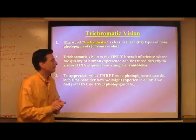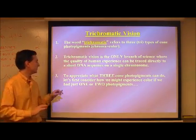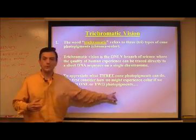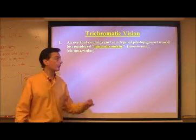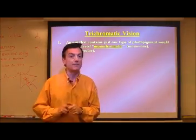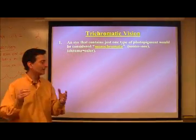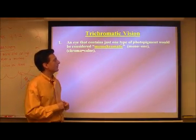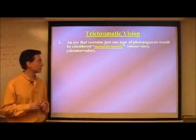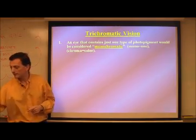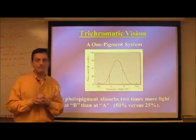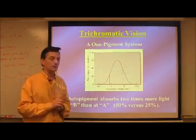To appreciate what our three cone photopigments can do, we'll first consider what it might be like if we had just one or two photopigments. We'll start with the case of a so-called monochromat — a hypothetical animal, and we'll see in a moment maybe not so hypothetical — that has just one kind of photopigment in their visual system. I'd like to set up this layout now because we're going to come back to it time and again in today's presentation.